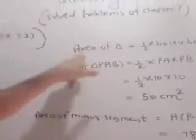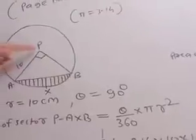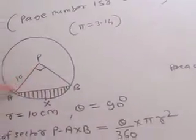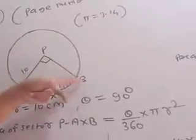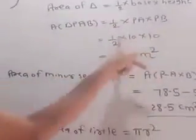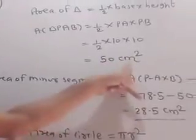Then area of triangle equal to 1 half base into height. Because here it's 90, so 1 side is base and 1 side is height. 1 half into product of the lengths of the perpendicular sides. So 1 half PA into PB. 1 half 10 into 10 equals 50 cm square.